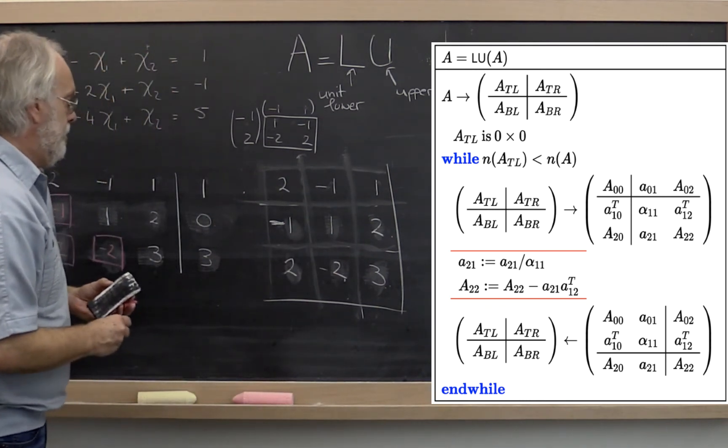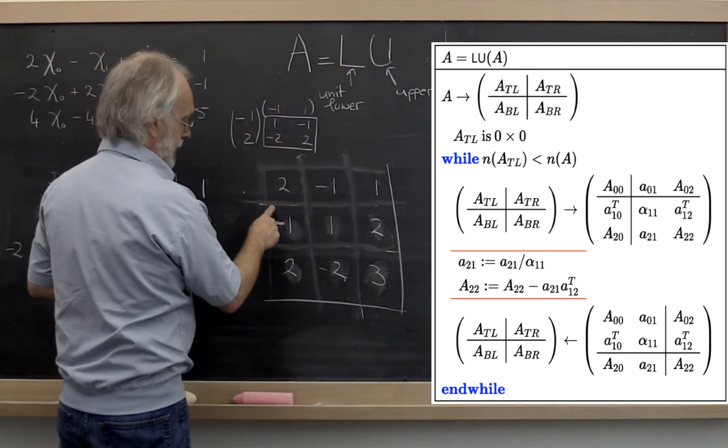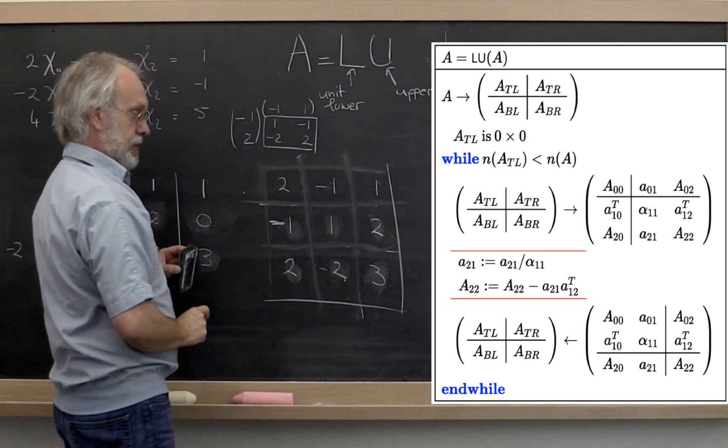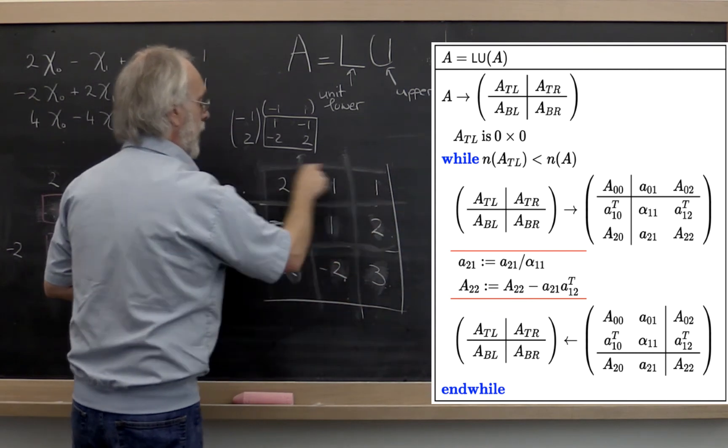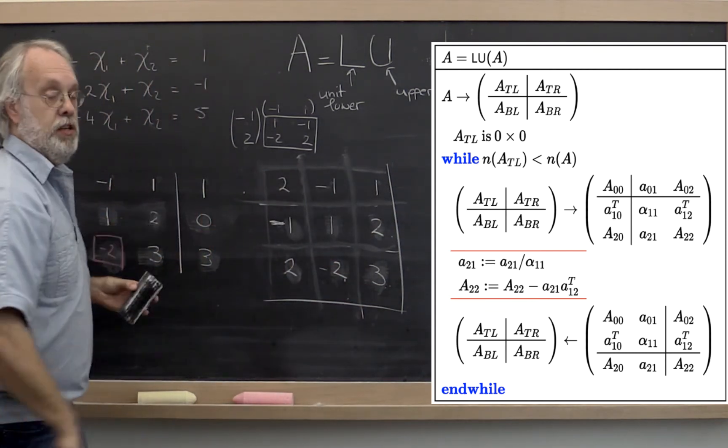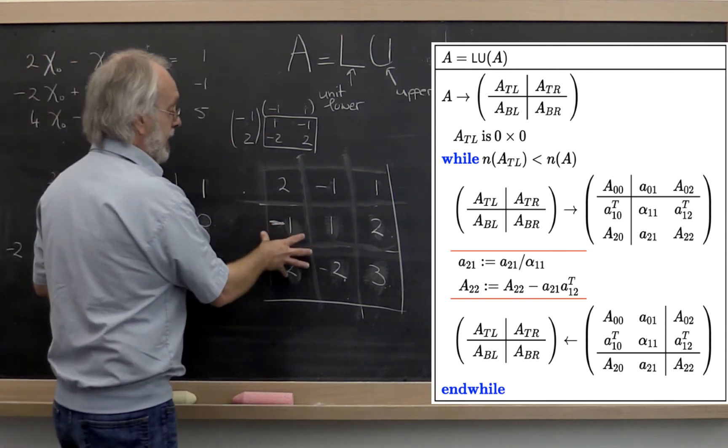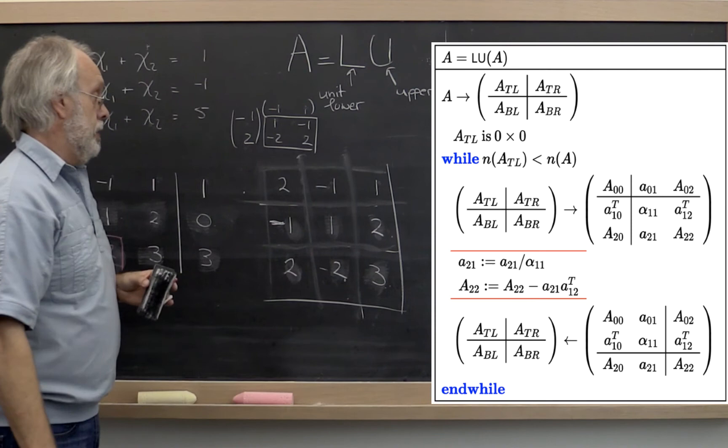And then what happens is that your L is sitting right here with the ones on the diagonal implicitly there. And your U is sitting right here in the upper triangular part having overwritten matrix A. And you can check, if you take that L and multiply it times U, you get your matrix back.